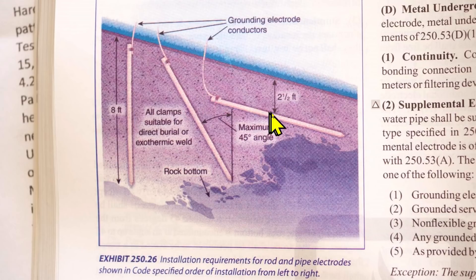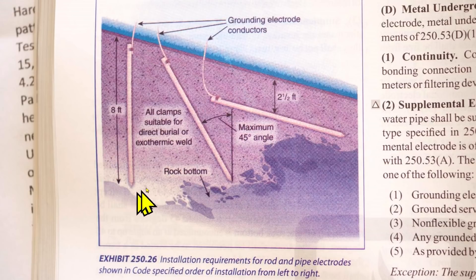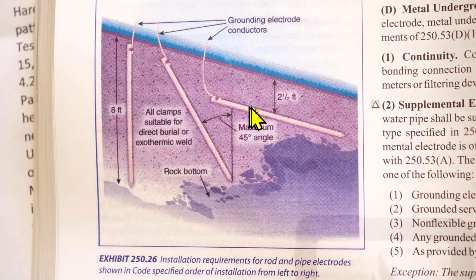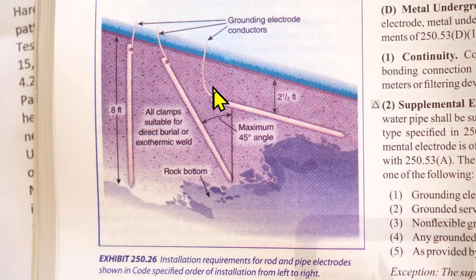Or you can dig a trench two and a half feet deep. I have a story about this: I installed a panel one time and I could not get my ground rod to go straight down, so I dug a ditch — you can call it a trench — two and a half feet deep. I put my ground rod down there, or you call them electrodes actually. This is an electrode, and I hooked up my grounding electrode conductor to my electrode ground rod.